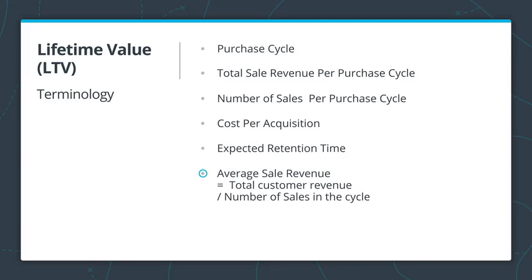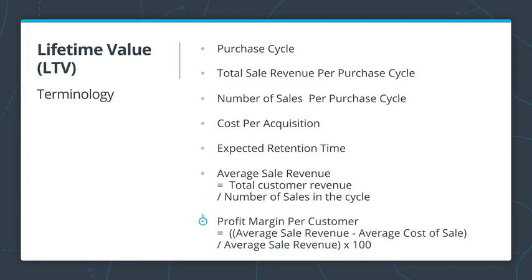Average sales revenue is the revenue you earn from the average customer per transaction during the cycle — this is the total customer revenue divided by the number of purchases in the cycle. Profit margin per customer is the percentage of sales that has turned into profits. Feel free to pause the video here and process what I've covered thus far.